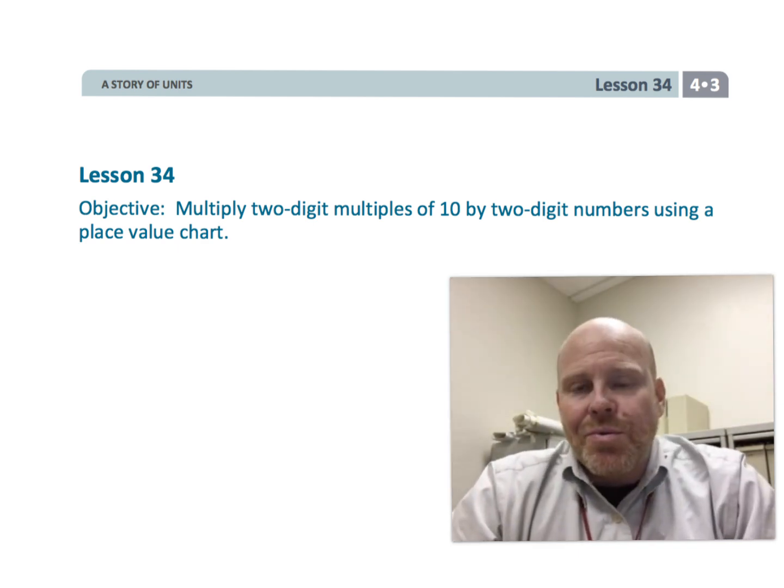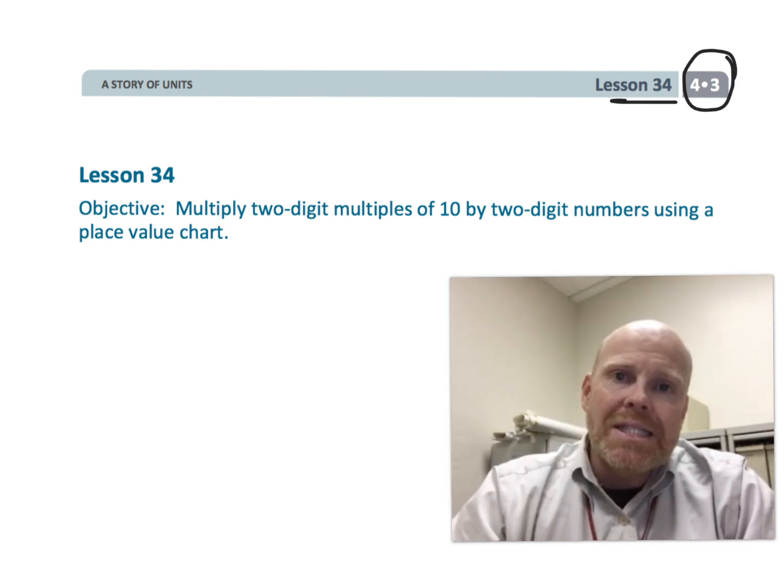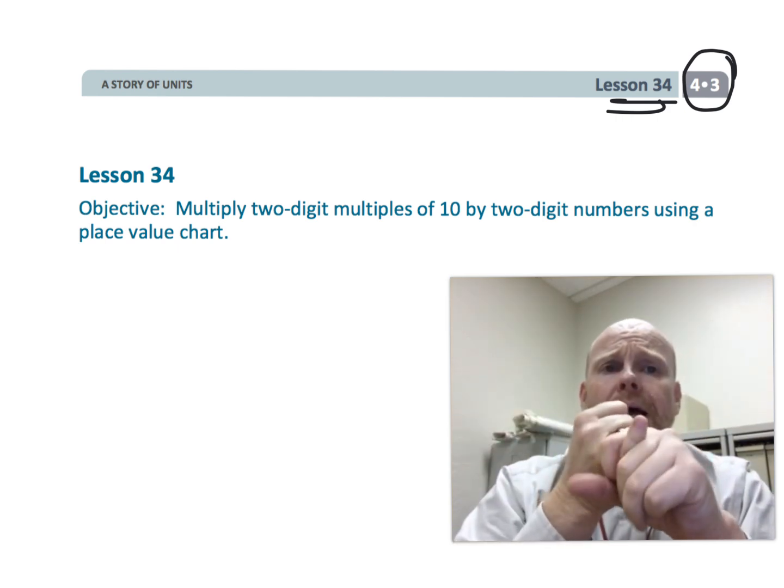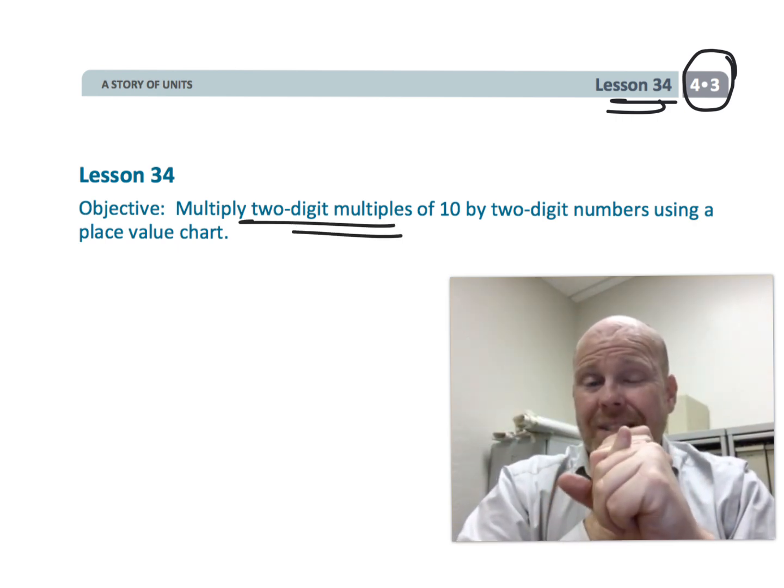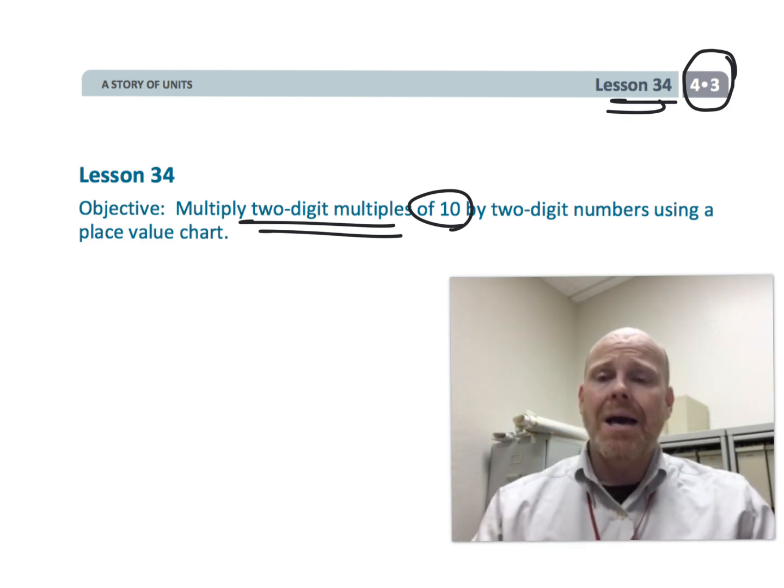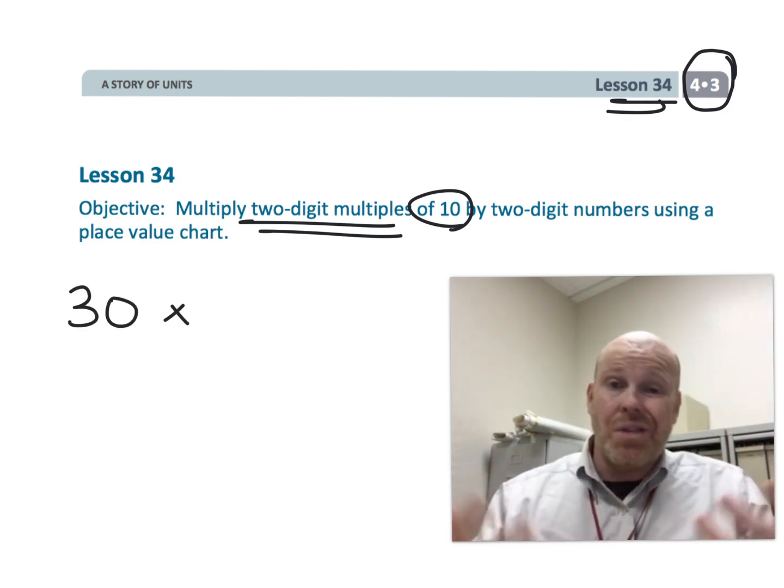Alright, this is fourth grade module three, lesson 34. In this lesson we're going to be focusing on multiplication now. We're going to be multiplying two-digit multiples of 10, so like 30 or 40 or 80, times a two-digit number like 23.